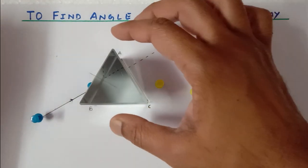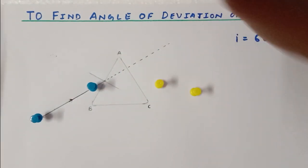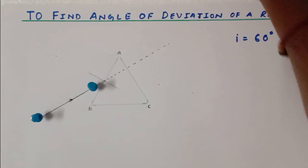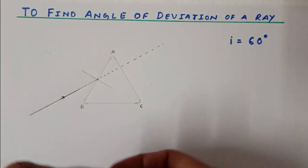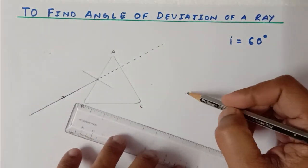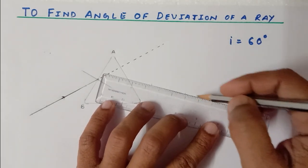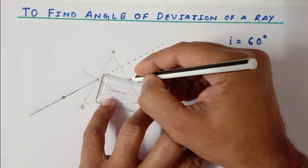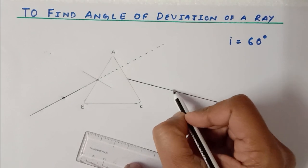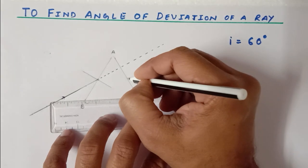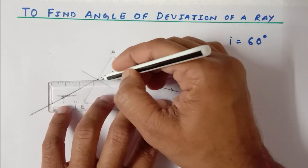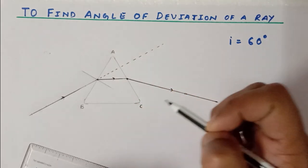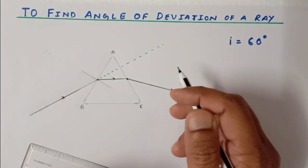We no longer require the prism — it's a fragile material, so we'll leave it aside. Now I am going to remove all four pins and join these two points with the AC part of the prism. This is our emergent ray. Now this point and this point need to be joined — so this is our refracted ray. As you can see, the refracted ray is not perfectly parallel to the base BC, so this prism is not in minimum deviation condition.